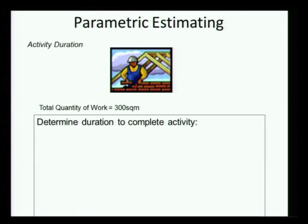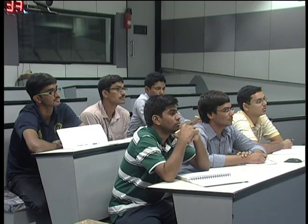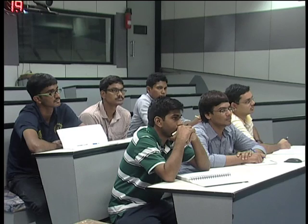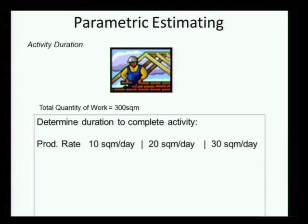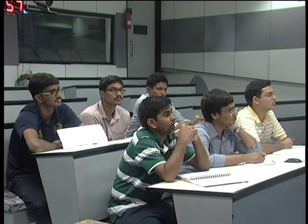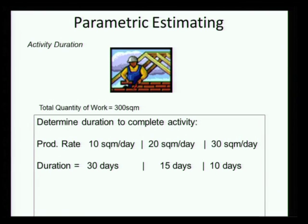Taking this analogy to a construction context: here is a masonry activity with a total quantity of 300 square meters of block work. What would be the time required to complete it? I need something equivalent to speed — a production rate. If the production rate is 10, 20, or 30 square meters per day, then the time required is 30, 15, or 10 days respectively. That is very straightforward — when we say a day, it means 30 working days at the defined work hours.